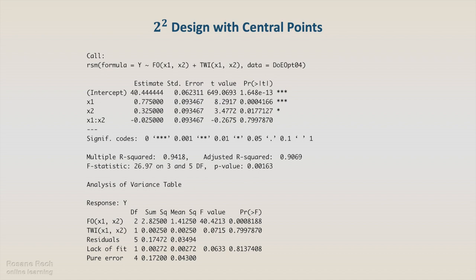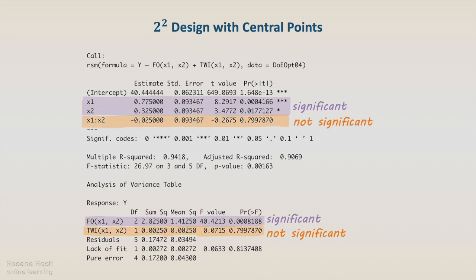The rsm function output shows that x1 and x2 from the first-order model are significant and that the two-way interaction is not significant. The p-value of 0.81 indicates that the lack of fit is not significant, meaning that the linear model is adequate to fit the data. The model also presents a high r-squared and a low p-value.